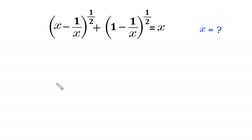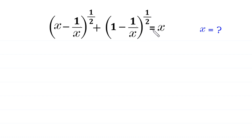Hello, welcome to how to solve this very nice algebra equation: the square root of (x minus 1 over x) plus the square root of (1 minus 1 over x) is equal to x.